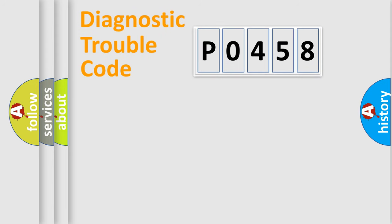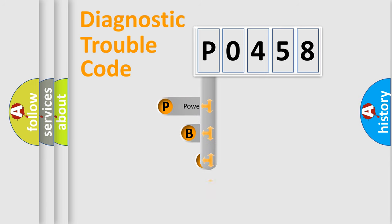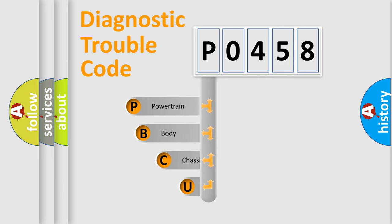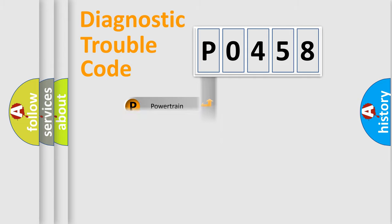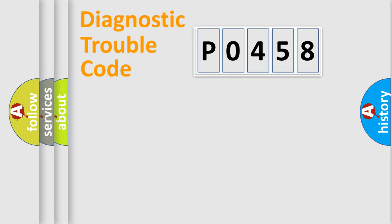Let's look at the history of diagnostic fault code composition according to the OBD2 protocol, which is unified for all automakers since 2000. We divide the electric system of the automobile into four basic units: Powertrain, Body, Chassis, and Network.